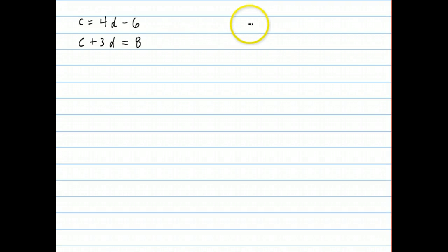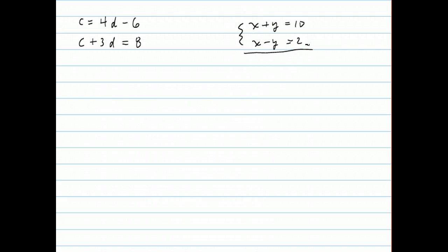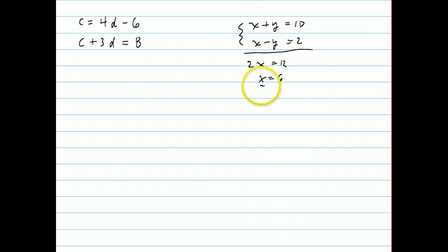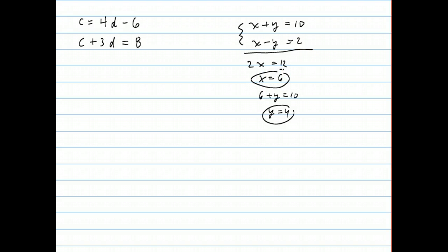For a system like x plus y equals 10 and x minus y equals 2, one method is elimination: you add the two equations together. Here the y and negative y cancel out, so you can solve directly for x, then plug that back in to get y equals 4.